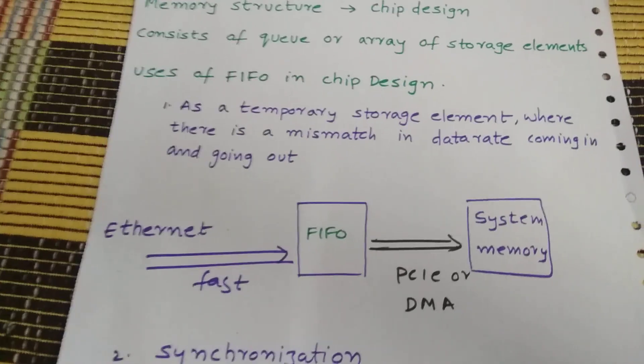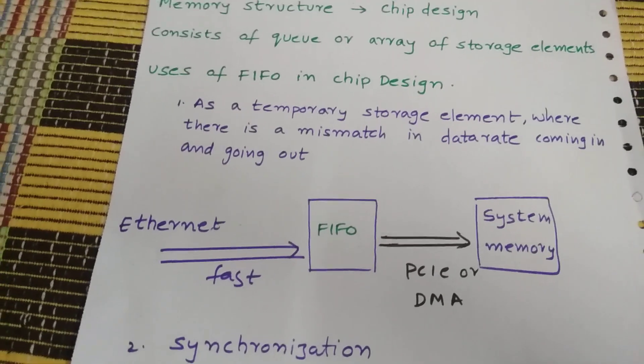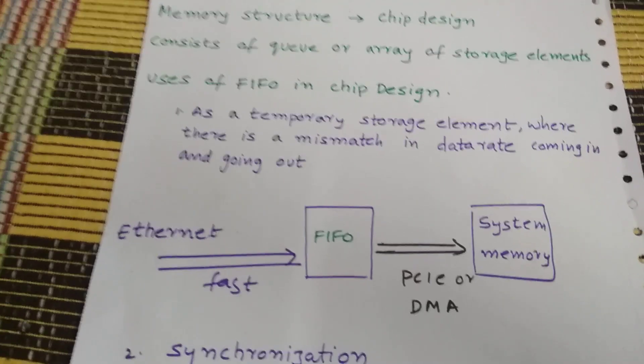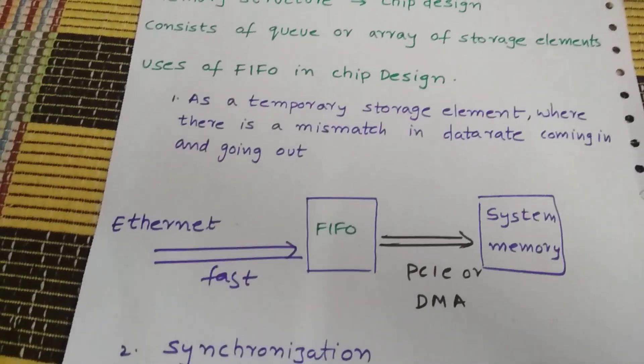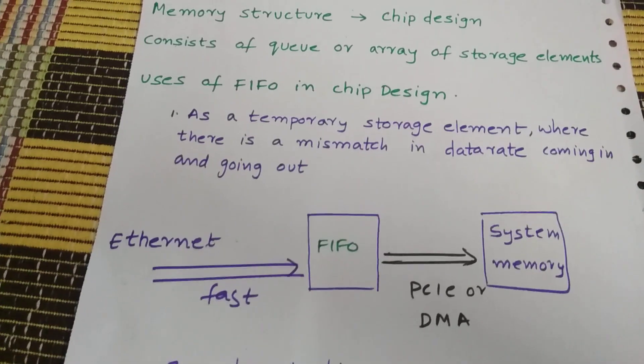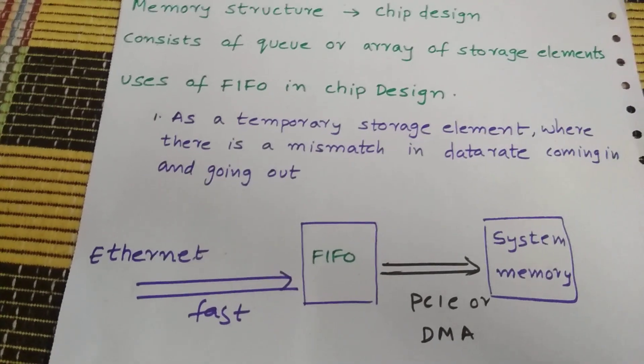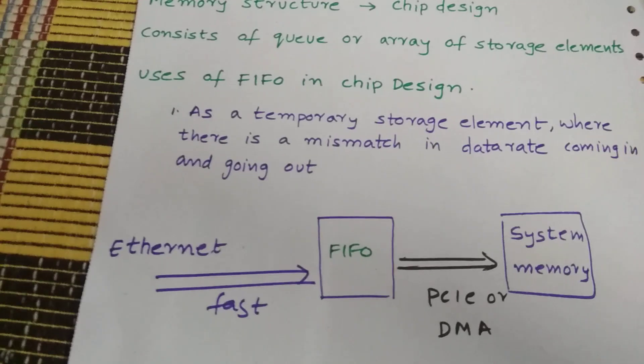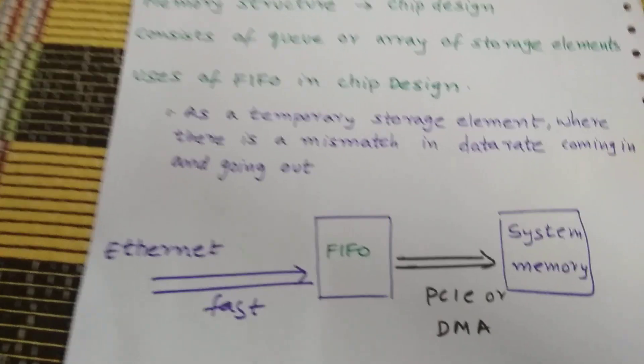And the backend DMA controller, that's direct memory access, or the peripheral component interconnect express, reads the data from FIFO and sends it to system memory. So a FIFO is used to reduce the mismatch so that there should be no mismatch in the data rate and the data will be protected and no data is lost.